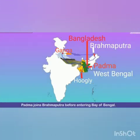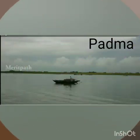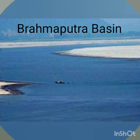The Ganga flows down through the northern plains, finally entering West Bengal. Here it splits into two branches: Hooghly, which passes through West Bengal, and the other branch called Padma, which flows into Bangladesh.